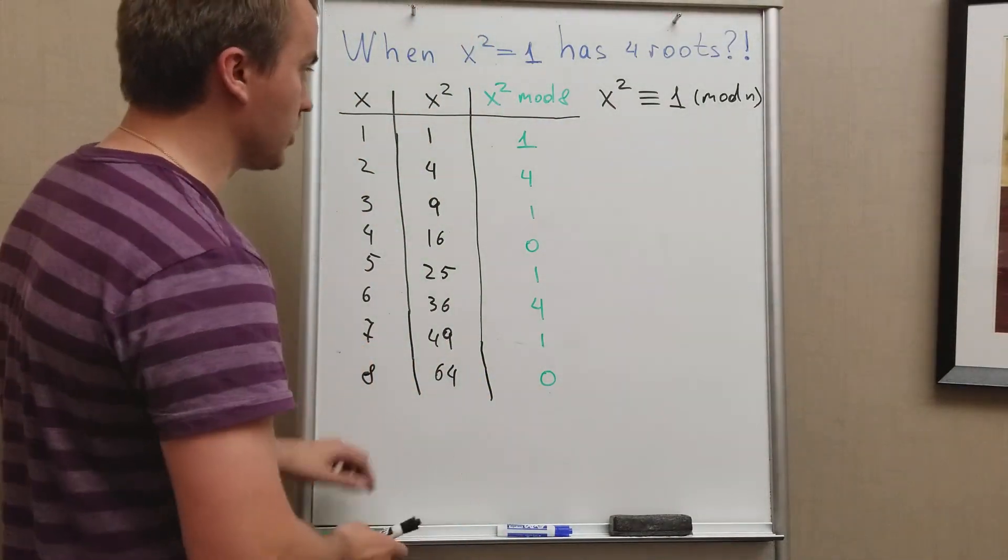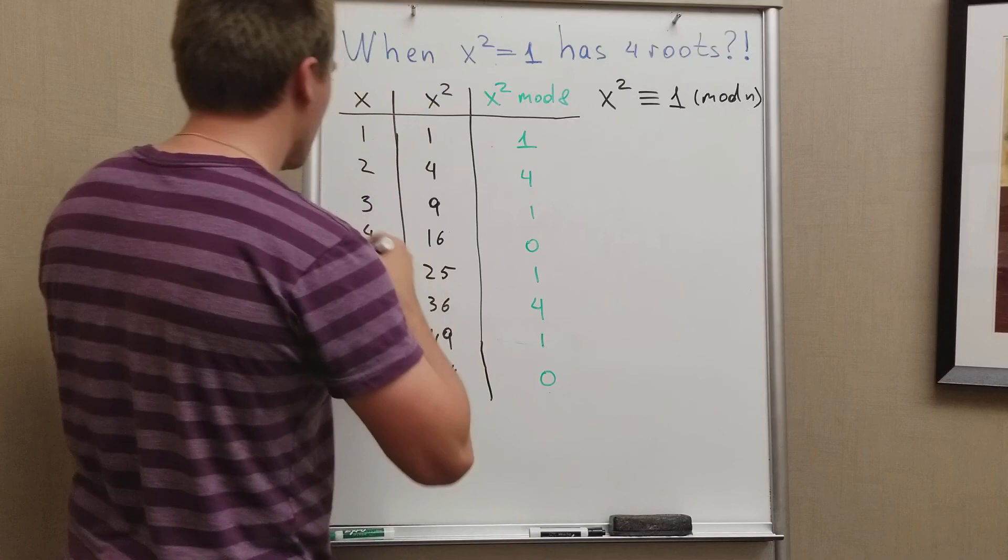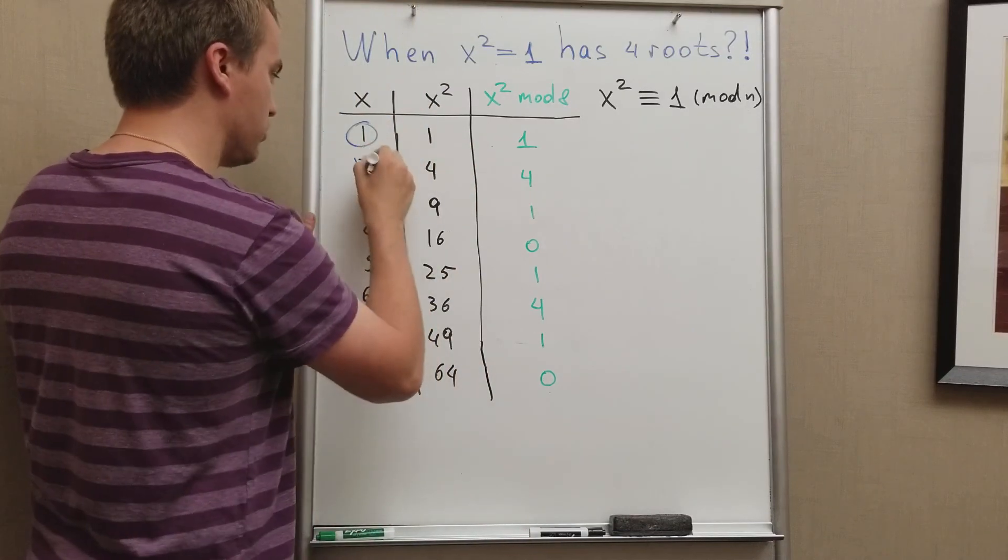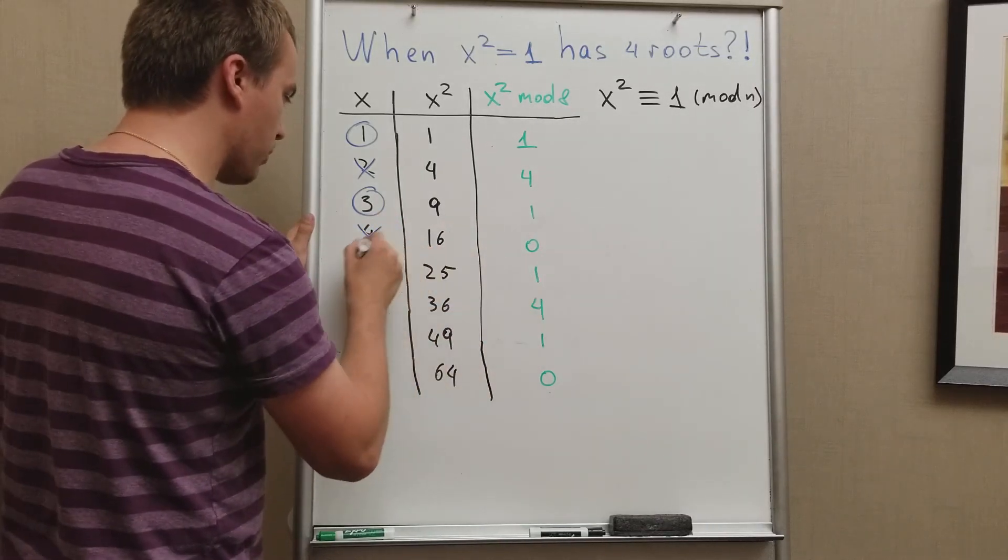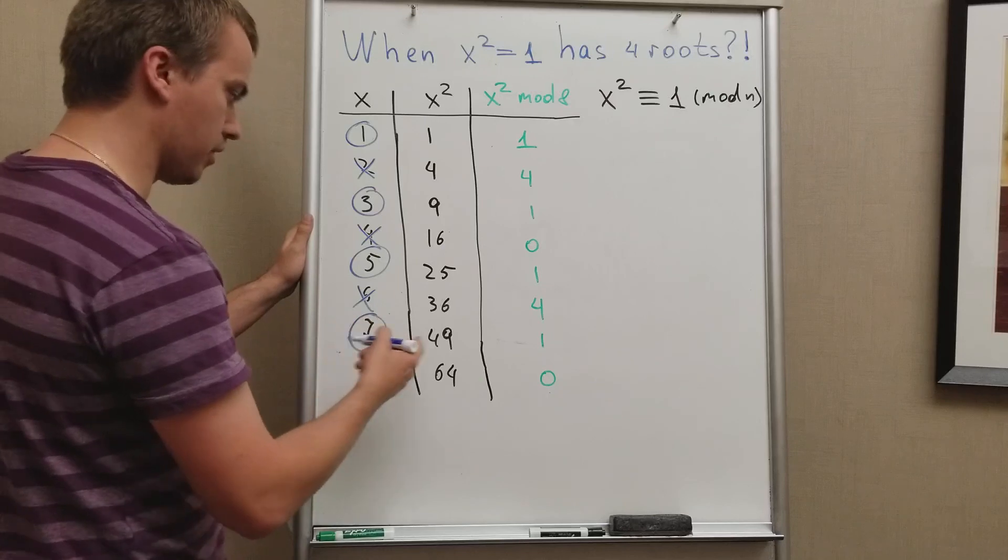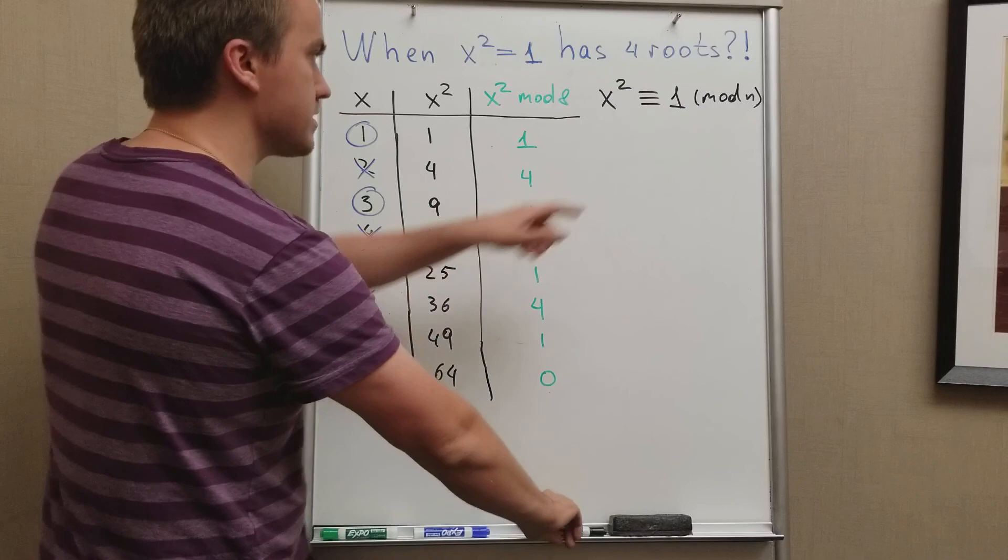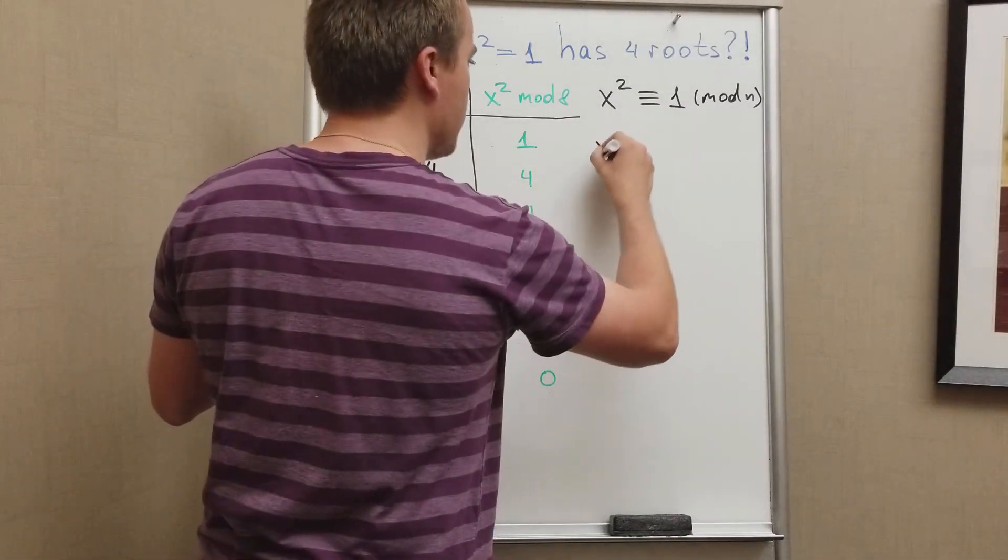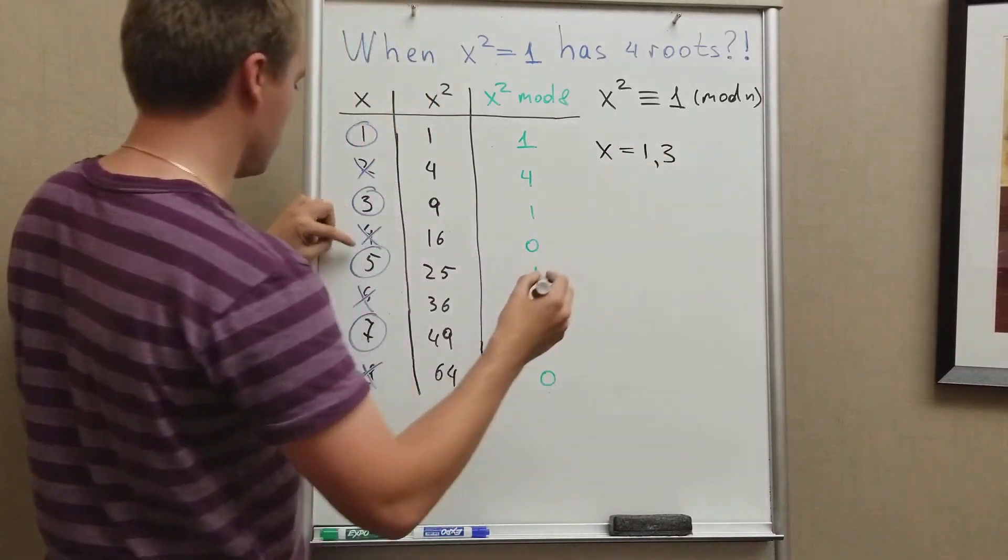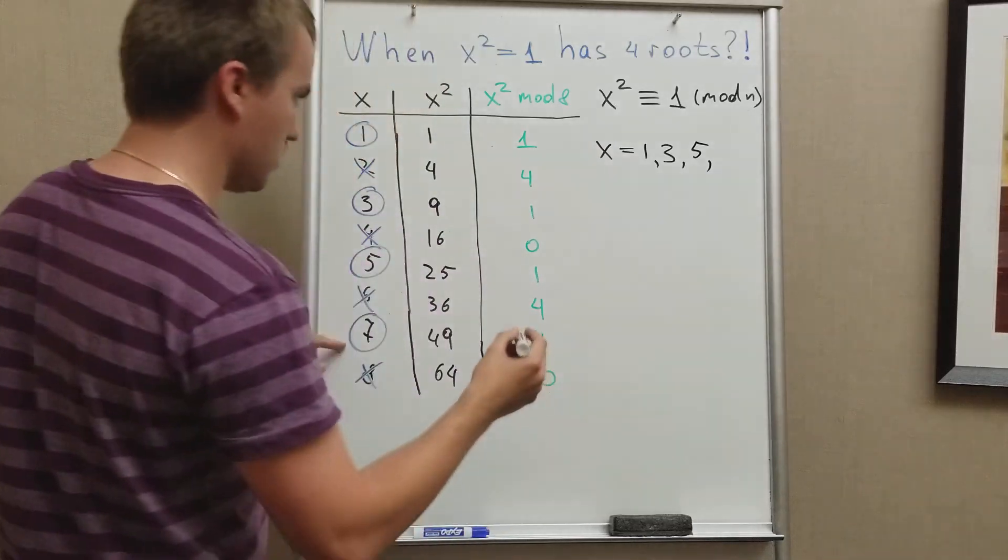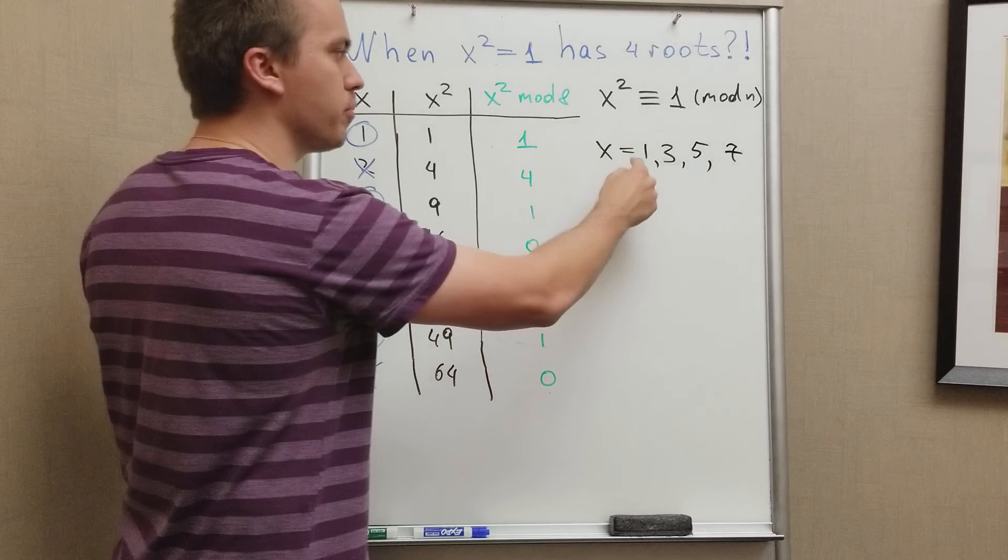Oh my gosh, and what we got. We have 1 gives 1, 2 doesn't work, 3 gives 1, 4 doesn't work, 5 gives 1, 6 doesn't work, and 7 gives 1, and 8 doesn't work. And you can see that in this equation our solution is going to be x equals 1, 3, 5, and 7.